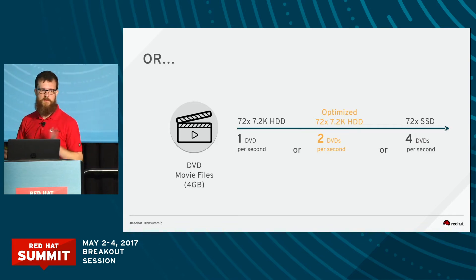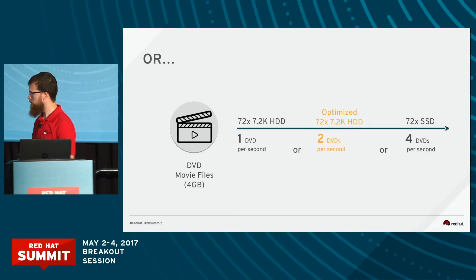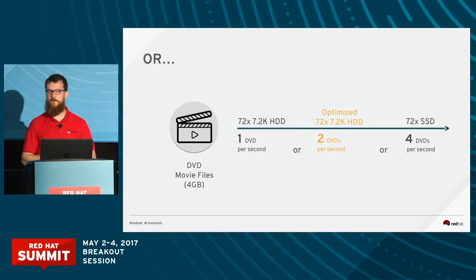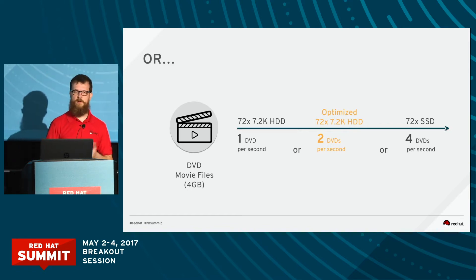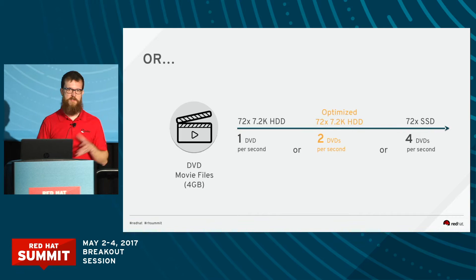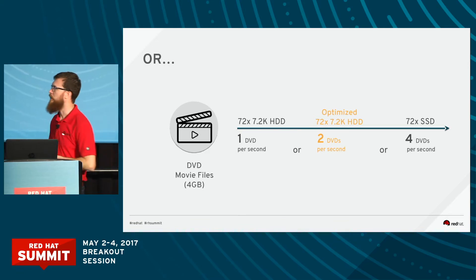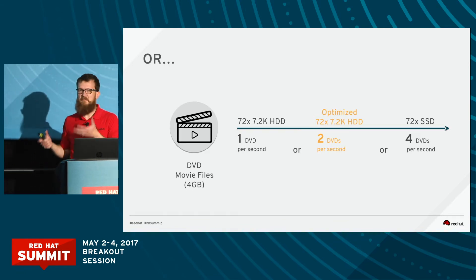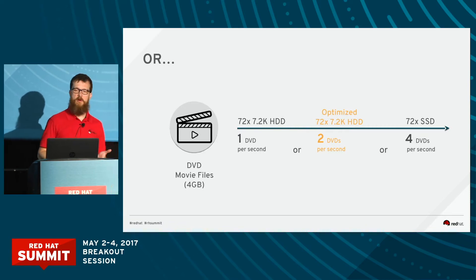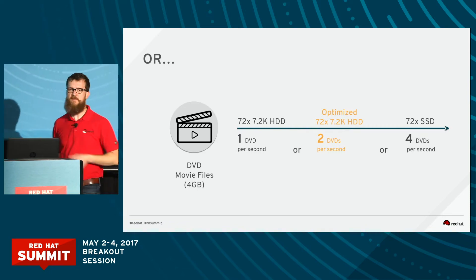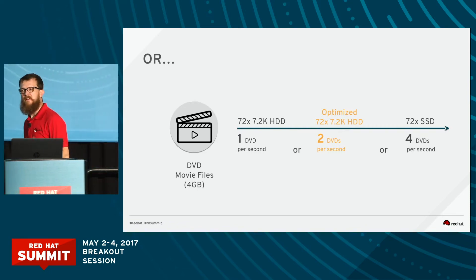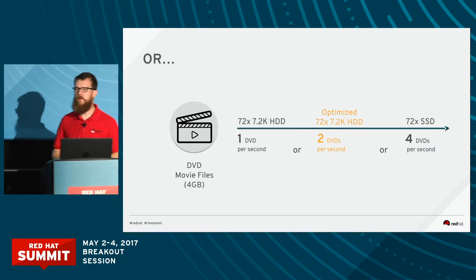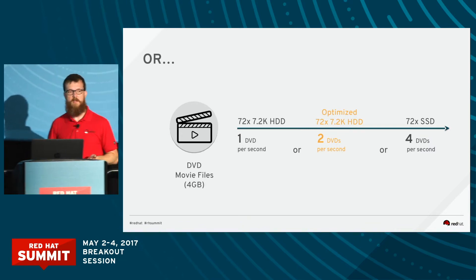Same nodes, configured slightly different way, and a different workload here. This time we have a four-gigabyte-based DVD kind of representative workload. What can we push through the system with this? Without putting a whole lot of effort in, what we get is a DVD per second. But let's take some time and configure that workload appropriately — we can get two DVDs per second.